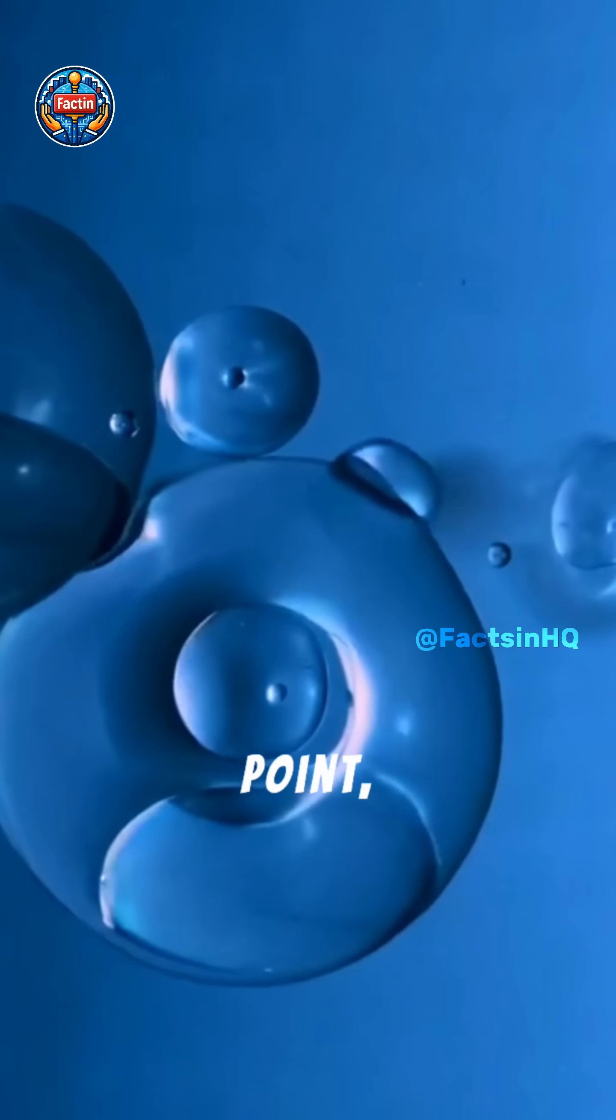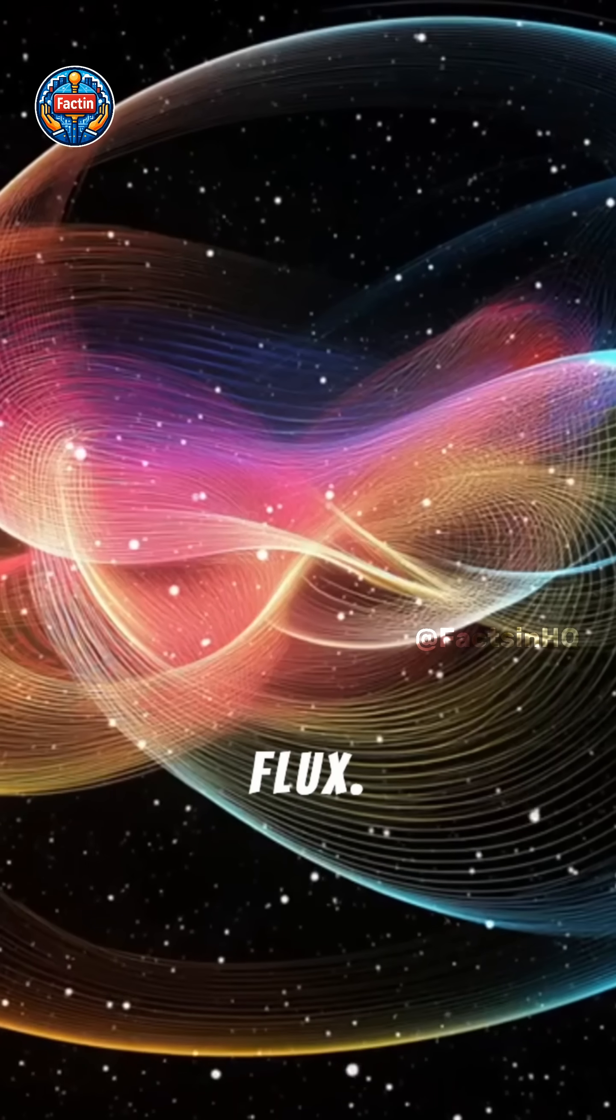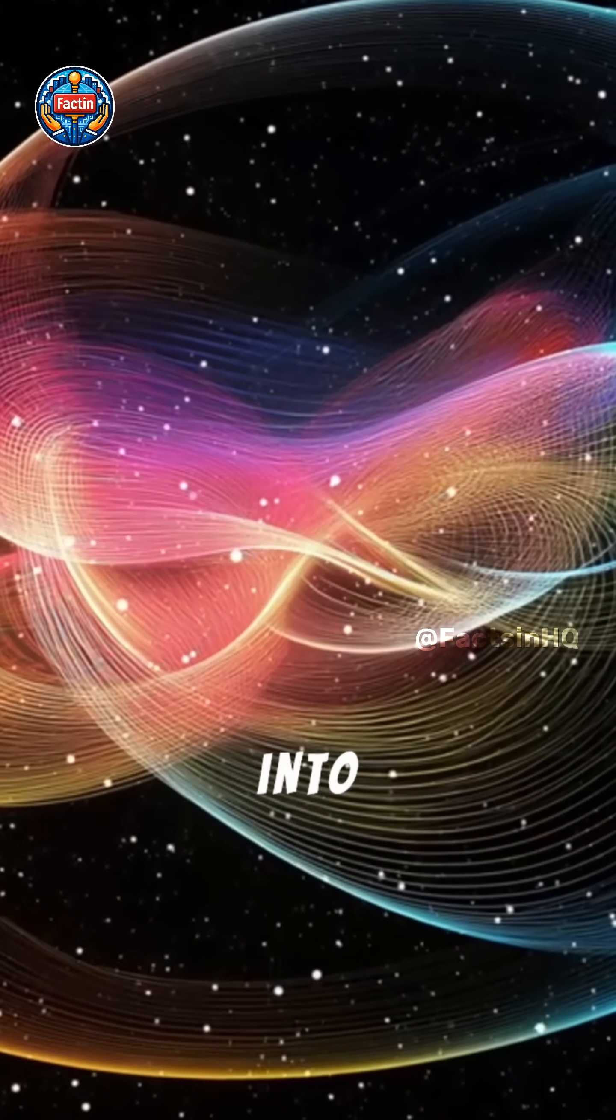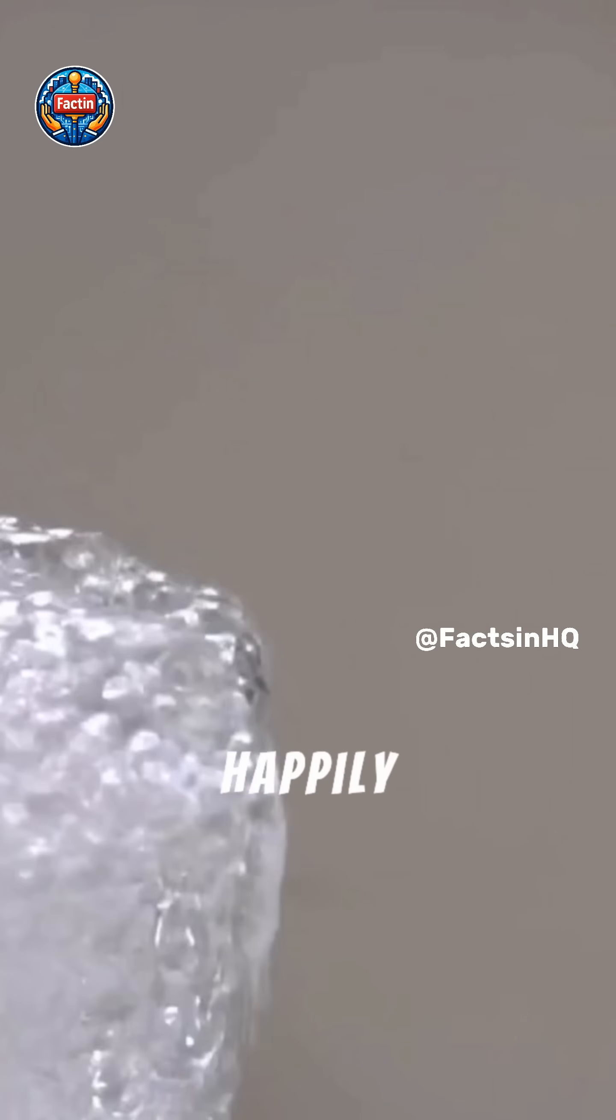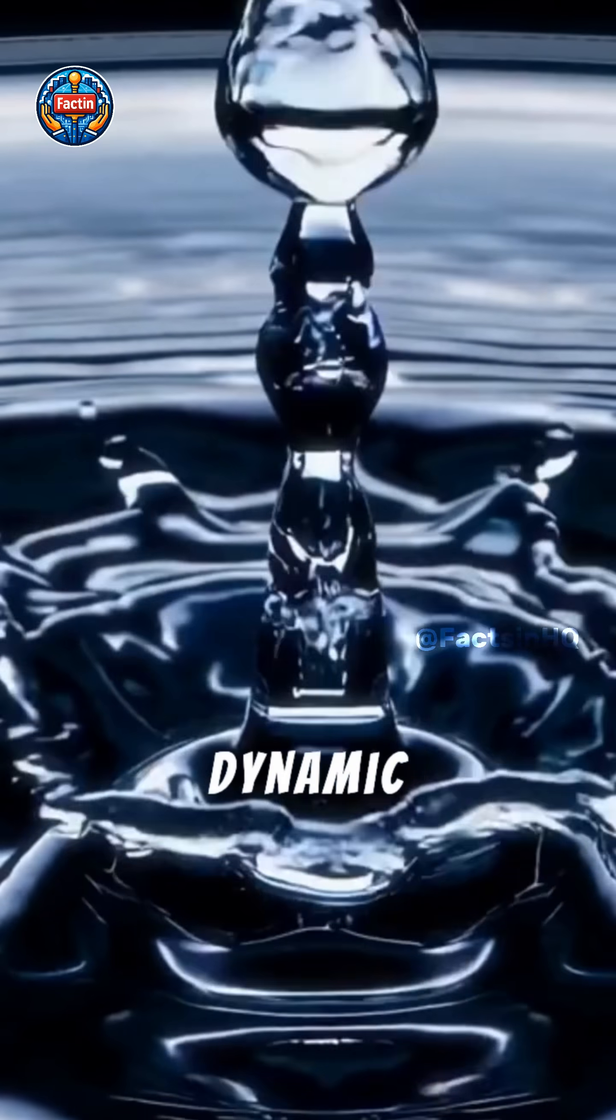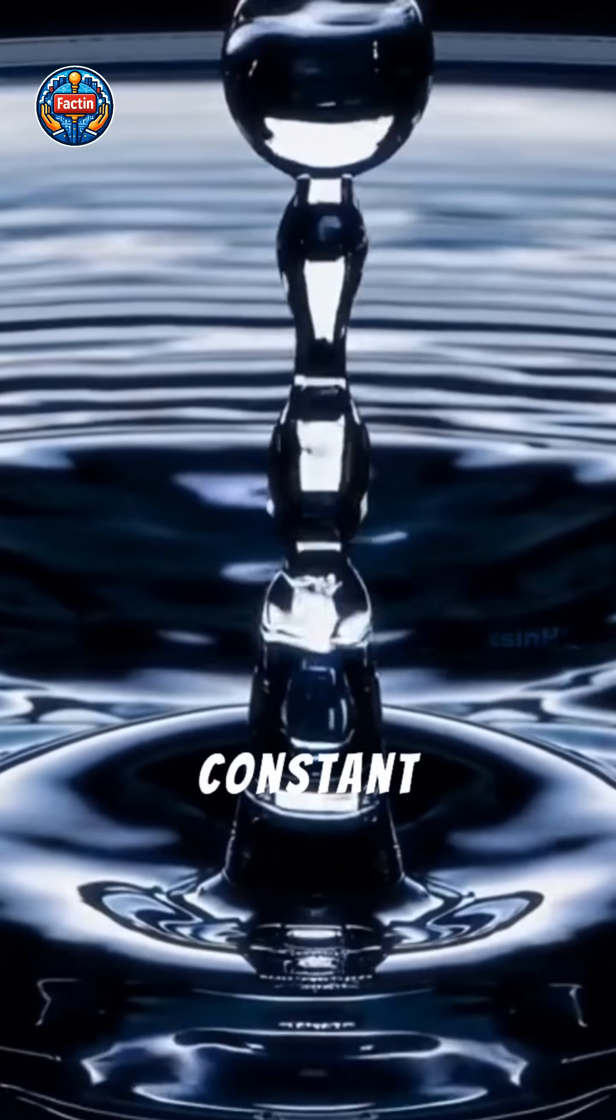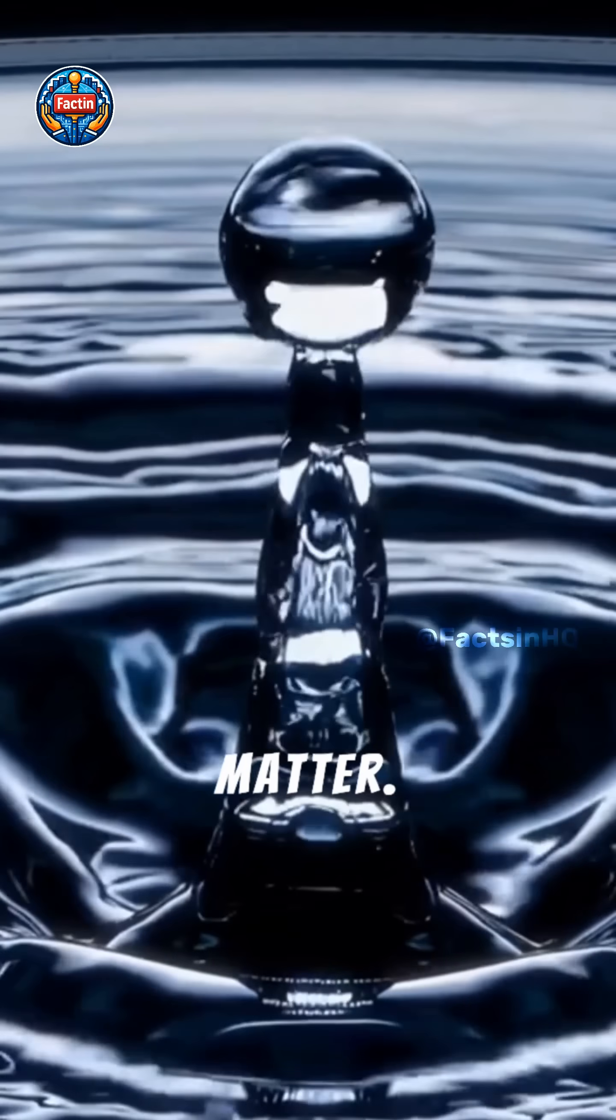At the triple point, water molecules are in constant flux. Some are breaking free into vapor, some are solidifying into ice, and others are happily sloshing around as liquid. It's a dynamic equilibrium, a constant dance between the three states of matter.